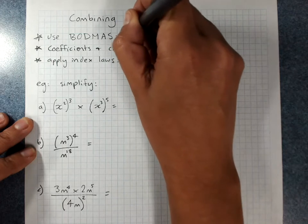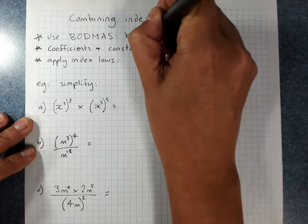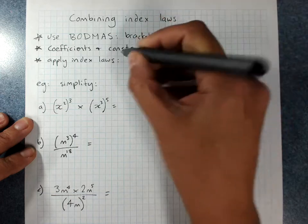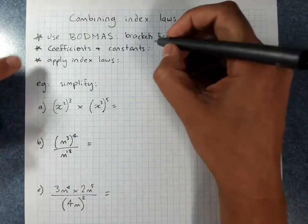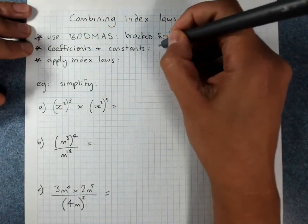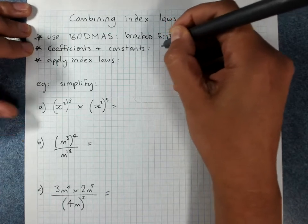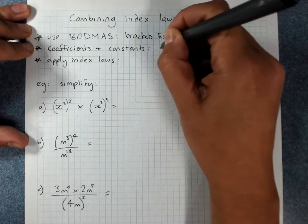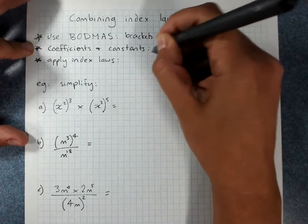Sorry, brackets first. Coefficients and constants, remember to use proper multiplying and dividing with a calculator, often not the index laws.